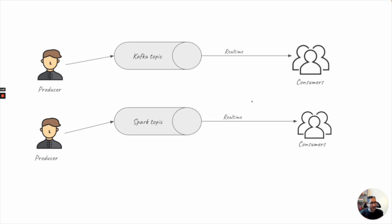By real time, what it means is that there is a few seconds of delay, but it's much better than before. Generally in the batch processing world, we consume data every minute or every hour. But in real time, messages come in way more faster.